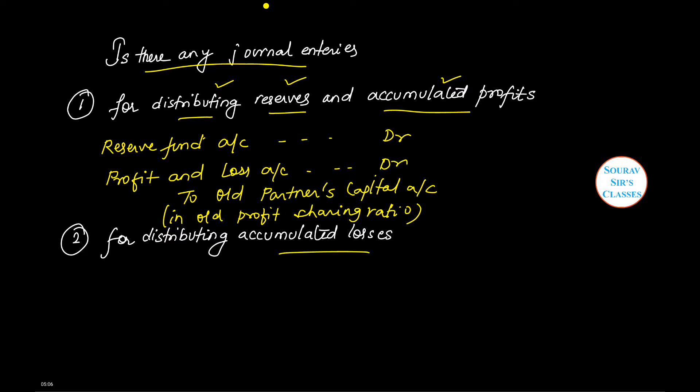The second entry is for distributing accumulated losses. If there is accumulated loss, the journal entry will look like: Old Partners' Capital Account Dr., To Profit and Loss Account Cr., in their old profit sharing ratio. These two journal entries are used when there are reserves or undistributed profits appearing in the balance sheet.